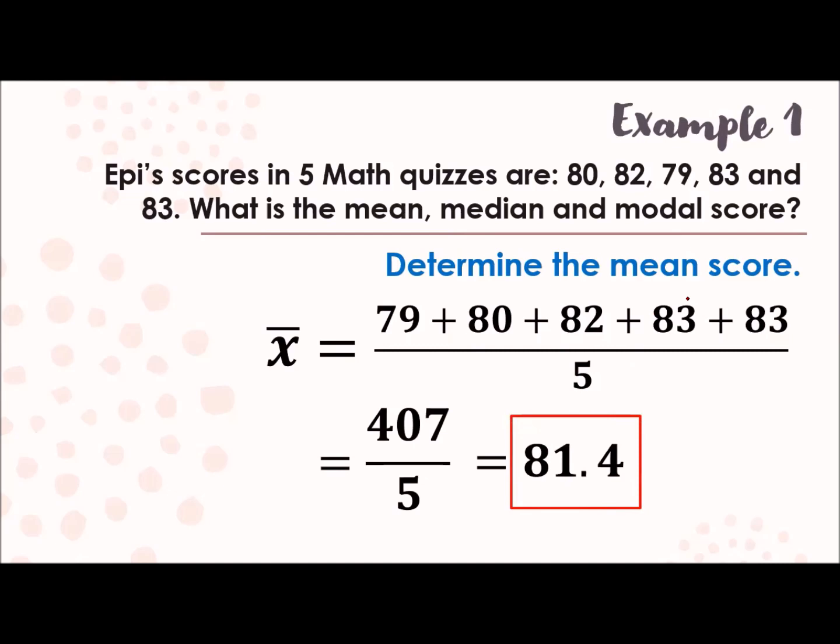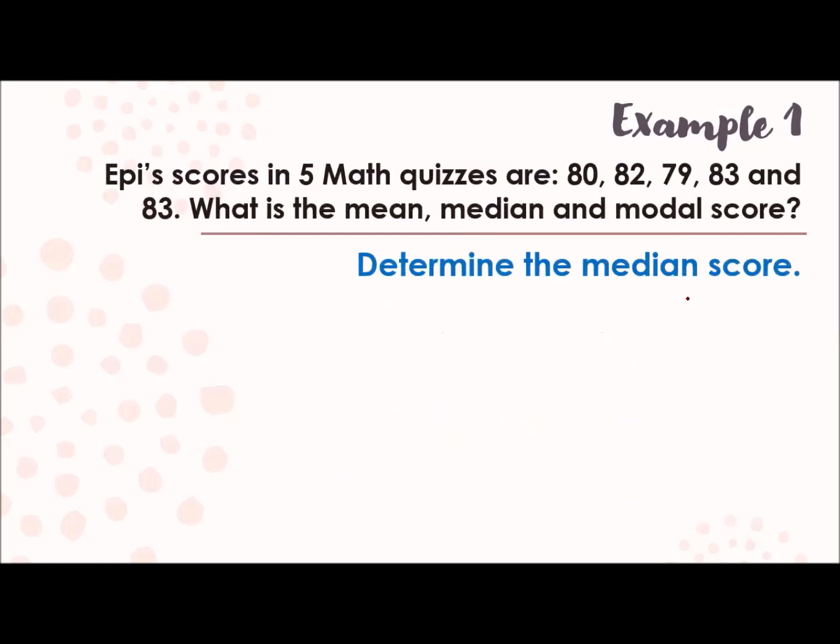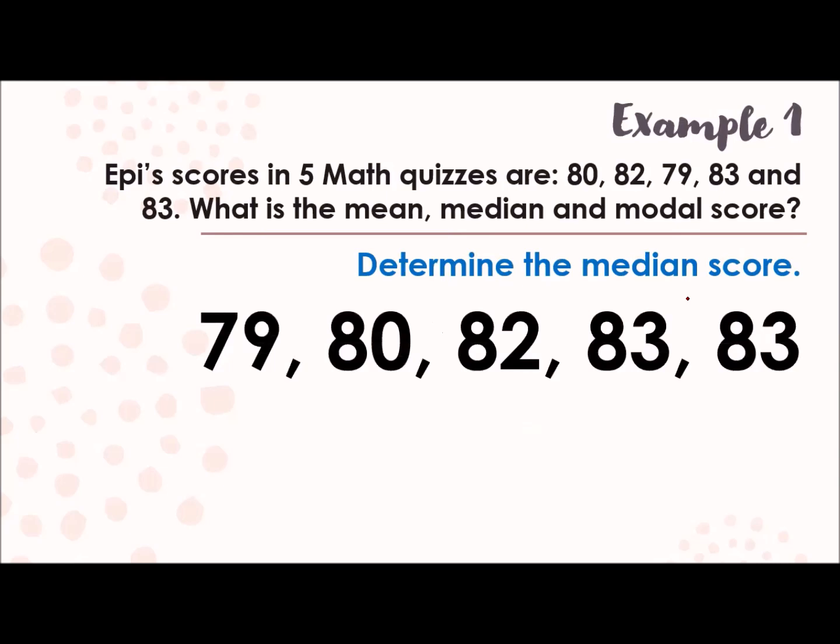The next one here is the median. Determine the median. So similar, I've arranged the scores from lowest to highest. When we say median, it's the one in the middle. So which among these scores is the middlemost? So the answer here is 82. Because it's the one in the middle.